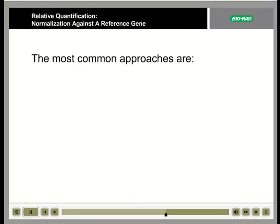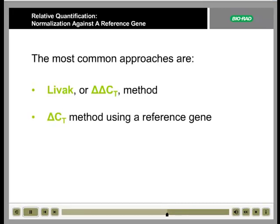The three most common approaches to normalization against a reference gene are the Livak method, also known as the delta-delta-CT method, the delta-CT method using a reference gene, and the Pfaffl method. Each method has its advantages and disadvantages, as well as assumptions that must be met.